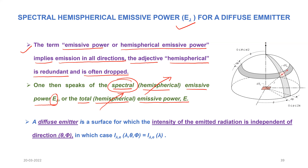What is a diffuse emitter? A diffuse emitter is a surface for which the intensity of the emitted radiation is independent of direction theta and phi. So a diffuse emitter will emit with equal intensity in all directions. That is why I_lambda_e, which has dependence on lambda, theta, and phi, can now be taken as I_lambda_e with dependence only on lambda — we have omitted the directional dependence on theta and phi.